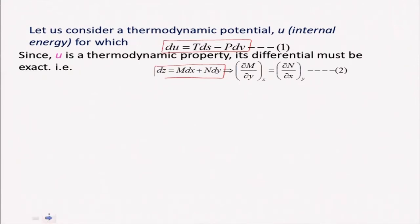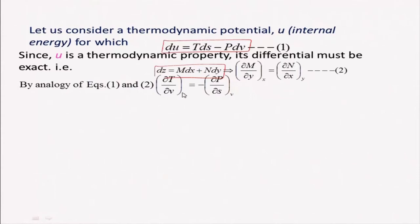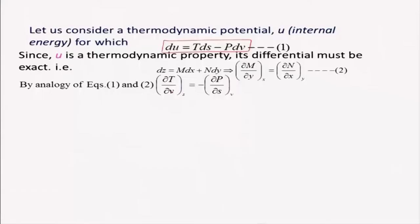So I can write this condition for internal energy as a property: ∂T/∂V|S = −∂P/∂S|V. The left-hand side is the change in temperature with respect to specific volume, whereas the right-hand side is the change in pressure with respect to entropy. Entropy is not a measurable property, whereas temperature, volume, and pressure are measurable. This expression is basically known as the Maxwell relation.